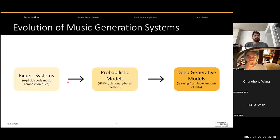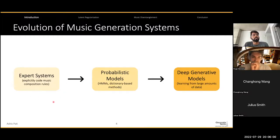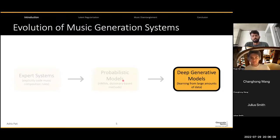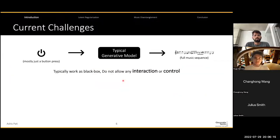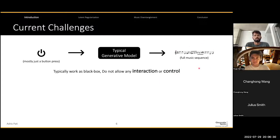Over the last seven decades, we have made great progress in the field of automatic music generation and composition systems. We started with expert systems, starting from the Illiac Suite by Hiller and Isaacson, which explicitly coded music composition rules, to more probabilistic models. More recently, deep generative models have emerged as the state of the art for several music generation tasks. While most of these models perform pretty well, they suffer from a couple of challenges: they typically work in a black box paradigm where they don't allow any kind of interaction or control over the generative music sequence.